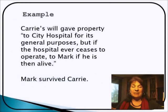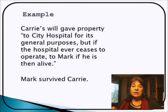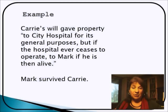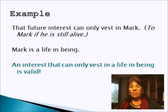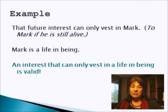Here's another example. Carey's will gave property to City Hospital for its general purposes. But if the hospital ever ceases to operate, to Mark, if he is then alive. And Mark in fact survives Carey — the hospital now gets the property. Here again, this future interest could only vest in Mark, and only if he's still alive. Mark is a life in being. An interest that can only vest in a life in being is valid, because we're focusing on the lives.